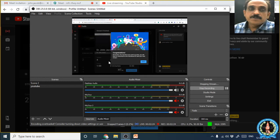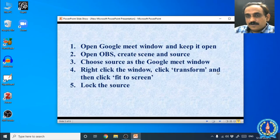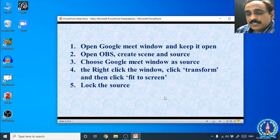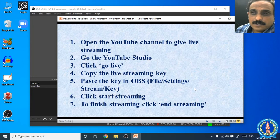In short, these are the steps: first, open the Google Meet window and keep it open. Then open OBS and create a scene. Under that scene, create a source — the source should be the Google Meet window. Then right-click the source, click Transform, and click Fit to Screen so that the window fills the entire frame. Then lock the source by clicking the lock button on the right side of the source.